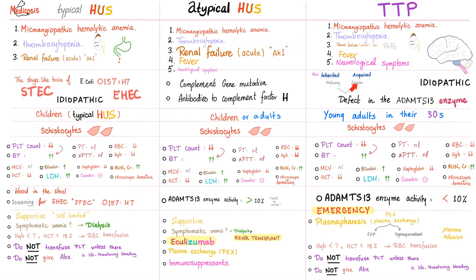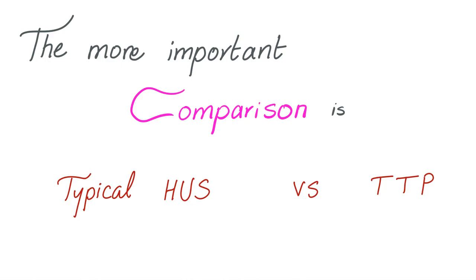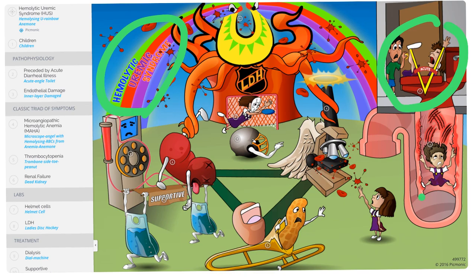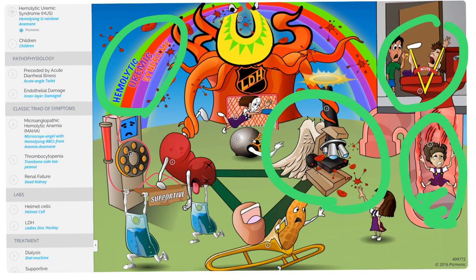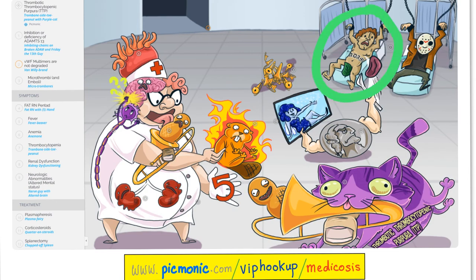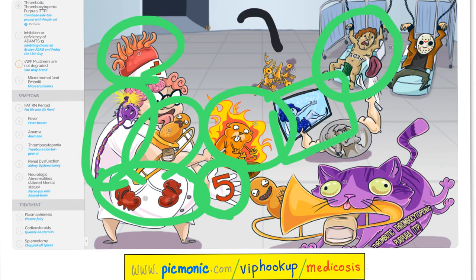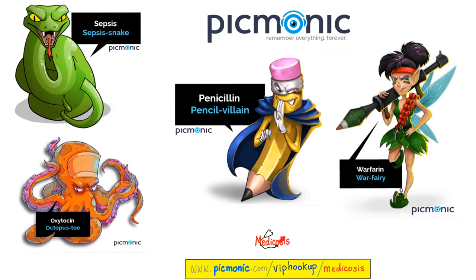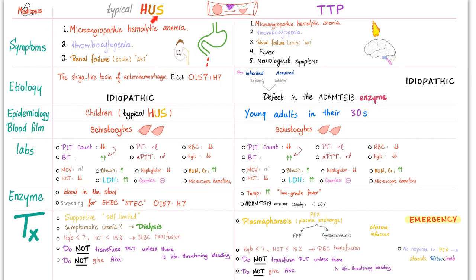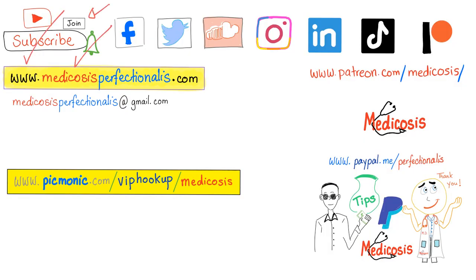The most important comparison for your exam is between typical HUS and TTP. Typical HUS presents with acute diarrhea, injured endothelium, and blood in the stool — remember the triad of microangiopathic hemolytic anemia, thrombocytopenia, and acute renal failure. TTP involves a defect in ADAMTS13 and presents with the pentad: microangiopathic hemolytic anemia, thrombocytopenia, acute renal failure (though not very common), fever, and neurological symptoms. It is an emergency — do not forget plasmapheresis. Repetition is the mother of pedagogy. Thank you for watching. Please subscribe, hit the bell, and click the join button. This is Medicosis Perfectionals, where medicine makes perfect sense — be safe, stay happy, and study hard.